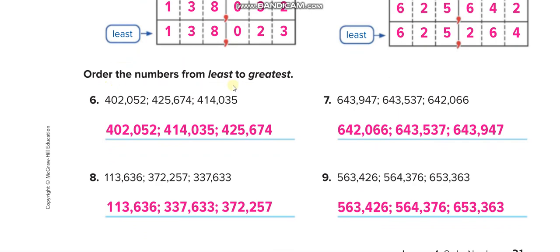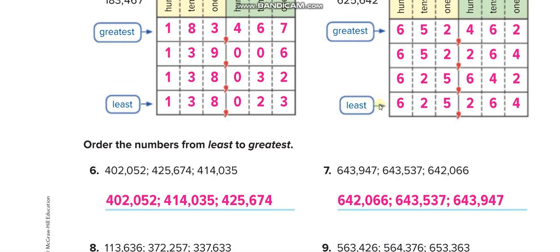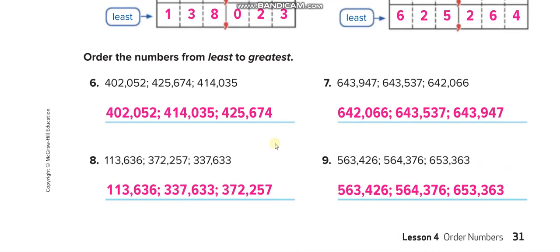Now this one is the opposite: order the numbers from least to greatest. You guys will solve questions 6, 7, 8, and 9 by yourself, then check and match your answers from this video. That is page 31.